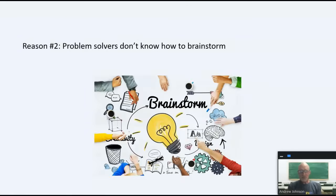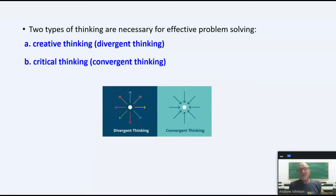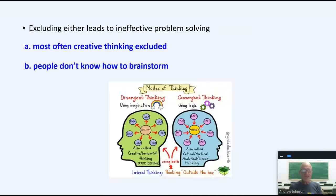The second reason is problem solvers often don't know how to brainstorm. Now, two types of thinking are necessary to be an effective problem solver. You have to generate a whole bunch of ideas. This is creative or divergent thinking. But also, you have to evaluate ideas. This is critical or convergent thinking. Effective problem solvers are able to use both kinds of thinking. Ineffective problem solvers often use one but not the other. And creative thinking is most often excluded because people don't know how to brainstorm.